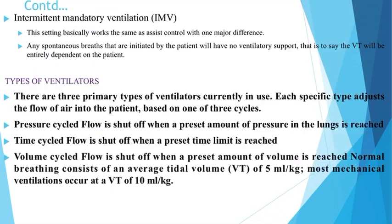Next we will discuss the types of ventilators. There are three types, which can be remembered as PTV. The first is pressure cycle flow — which is shut off when a preset amount of pressure in the lungs is reached. The second is time cycle flow — which is shut off when a preset time limit is reached. The third is volume cycle flow — which is shut off when a preset amount of volume is reached. So pressure, time, and volume — PTV — are the three types of ventilators.